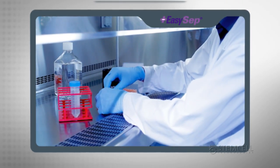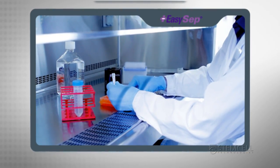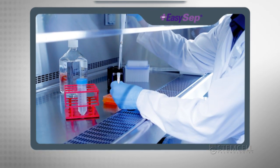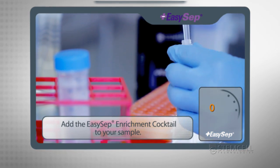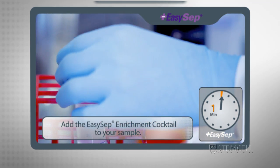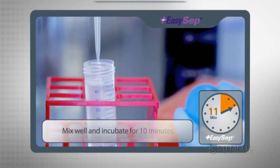To isolate human cells with EZ50, start by preparing your nucleated cell suspension in a 50 milliliter conical tube. First, add the EZ-Set Enrichment Cocktail to your sample and incubate for 10 minutes.